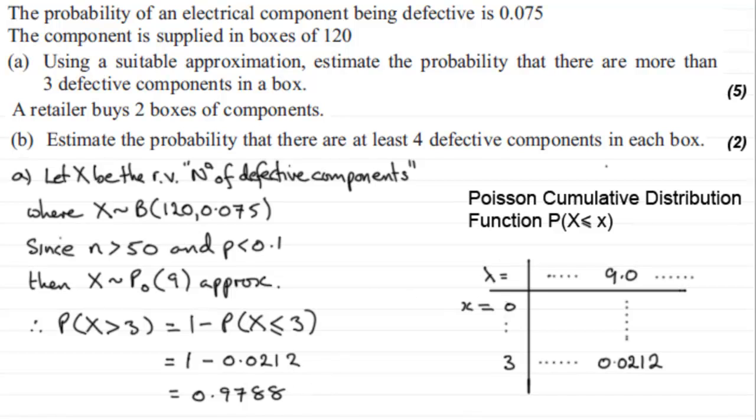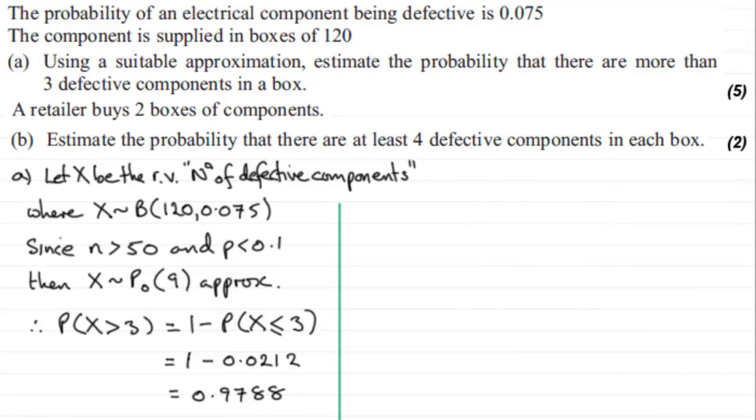We'll just border that off and we'll move now on to Part B. Now, in Part B, let's just put Part B here, we're told that a retailer buys two boxes of components. Estimate the probability that there are at least four defective components in each box.